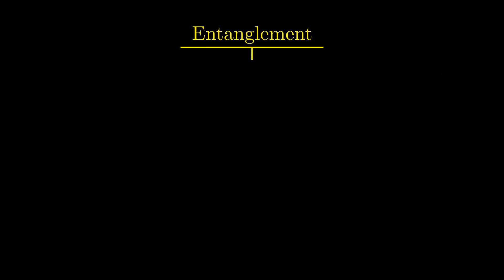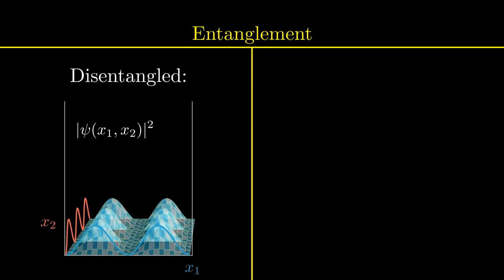Visually, we have already seen an example of an entangled and a disentangled state. Before symmetrizing our bosonic two-particle wavefunction, we constructed a two-particle wavefunction that was simply a multiplication of the two one-particle wavefunctions. On the left, we see their constructed wavefunction in the position basis.